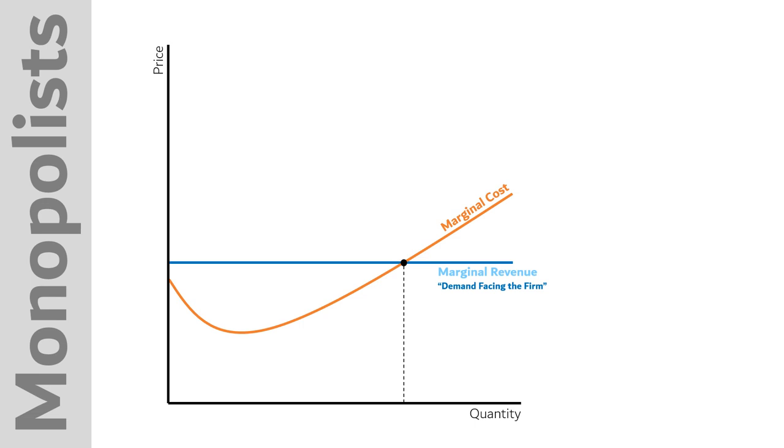In a competitive market, marginal revenue is flat like this because no matter how much we produce, we can sell our product at the market price. If a farmer grows corn, it doesn't really matter how big their farm is. They're still a small fraction of the total market, and so their supply won't significantly impact the market price.